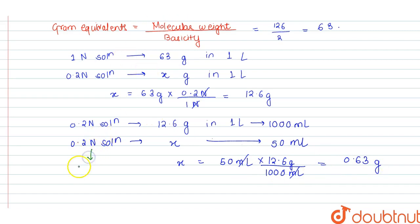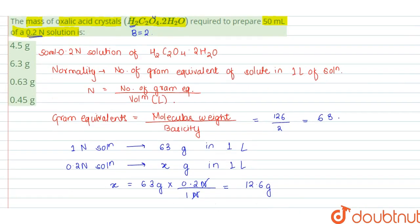So to prepare a 0.2 normal solution of oxalic acid crystals, we add 0.63 gram in 50 ml. The correct option is option 3: 0.63 grams.